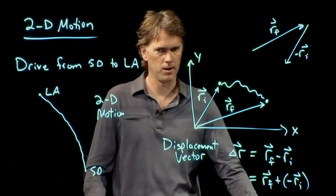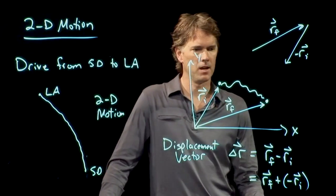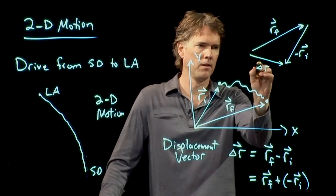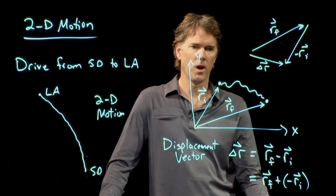The negative of RI will look like that. Okay, and now where is our delta R? Delta R is right there. Okay, where is it on our picture?